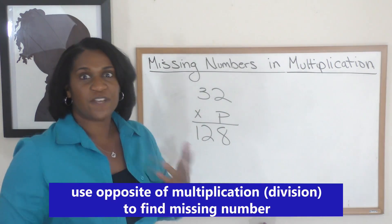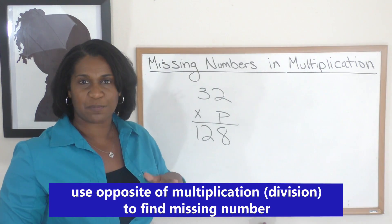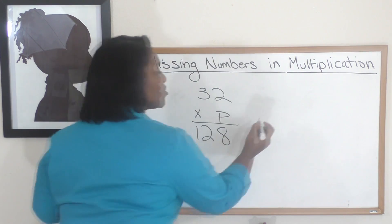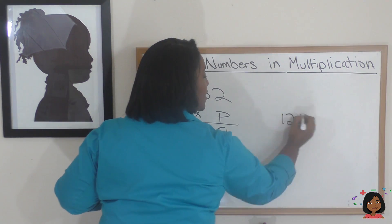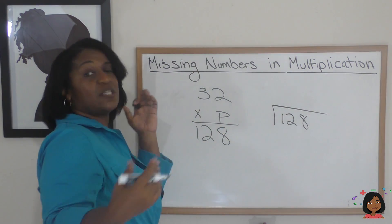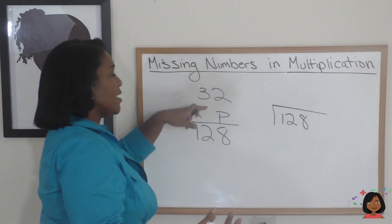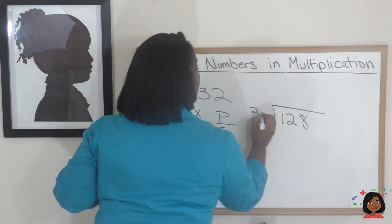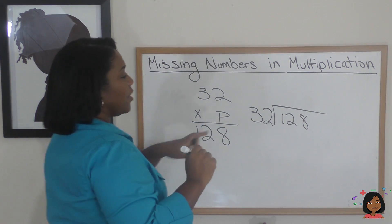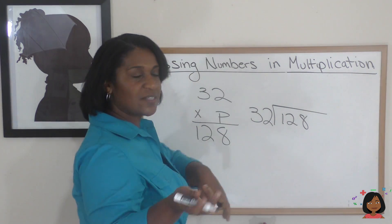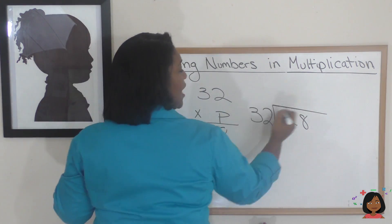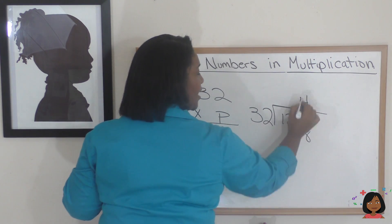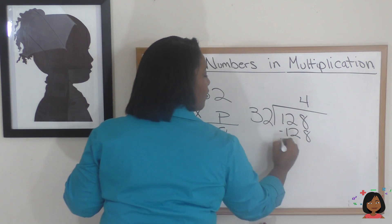We saw that we could use division to find the missing numbers in multiplication, so let's use that. We're going to start with 128 as our dividend — remember, the dividend sits on the inside. And 32 is going to be doing the heavy lifting here. So: 32 times what is 128?